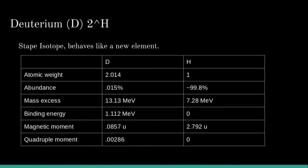Deuterium is a stable isotope that behaves like a new element. Here you can see the atomic weight of deuterium versus hydrogen—it's twice as heavy. Abundance is low. Mass excess is almost double.